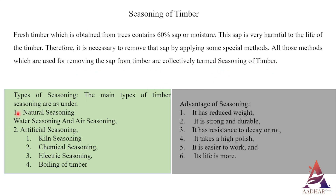Advantages of seasoning. Number one: it has reduced weight. Number two: it is strong and durable. Number three: it has resistance to decay or rot. Number four: it takes a high polish. Number five: it is easier to work. Number six: its life is more.